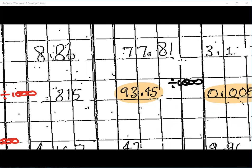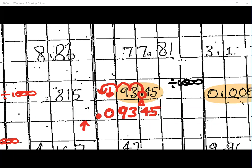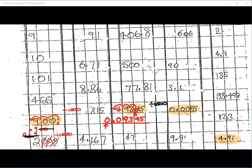Now 93.45 divided by 1,000 — what do we do? Move the decimal point three spaces to the left: drop it down, copy, copy, copy. What do you put in the empty gap? A zero. And what do you put at the front? Another zero, so the number looks and sounds right when you read it: 0.09345. Fantastic, lovely.